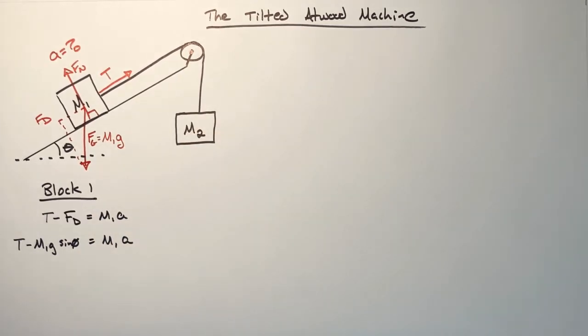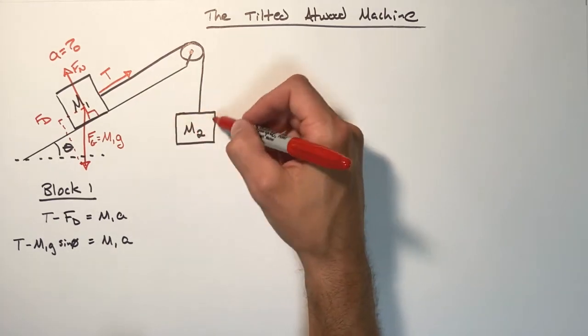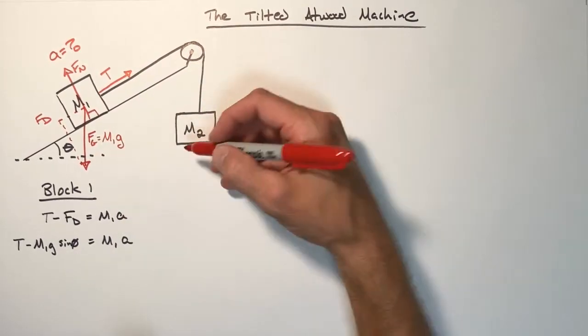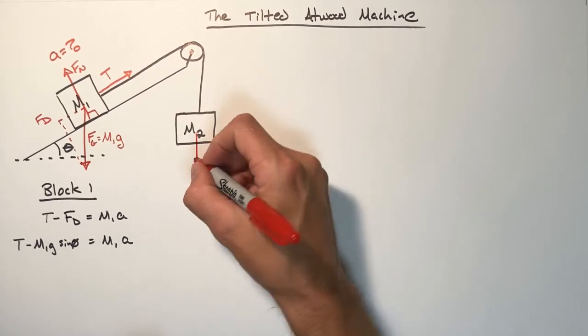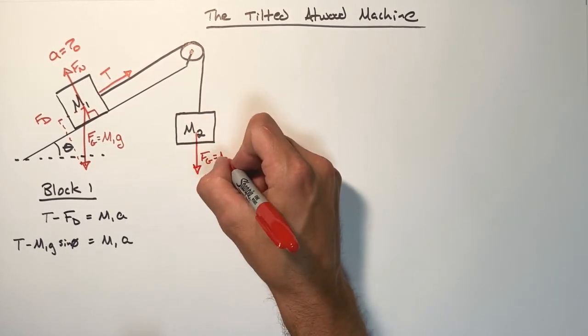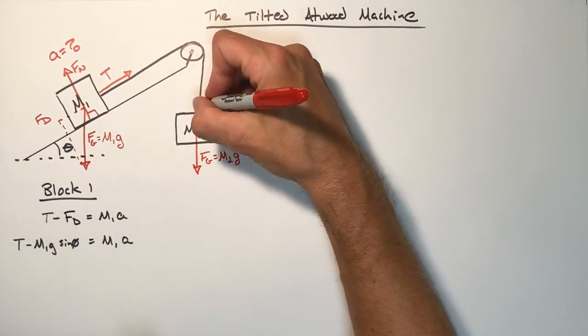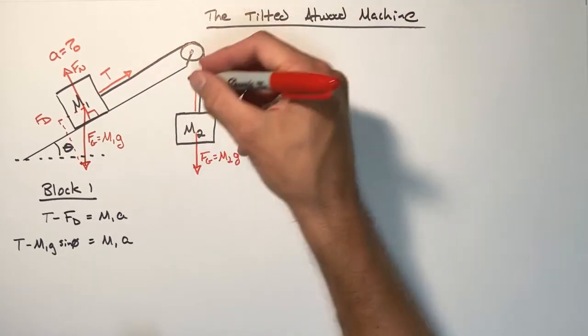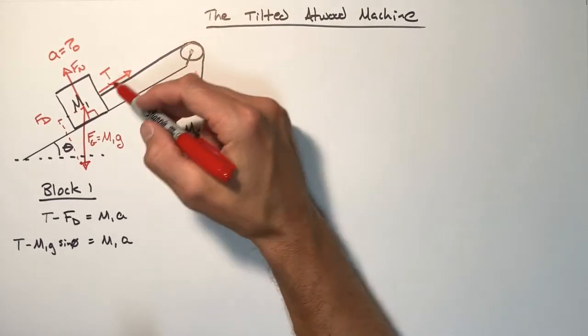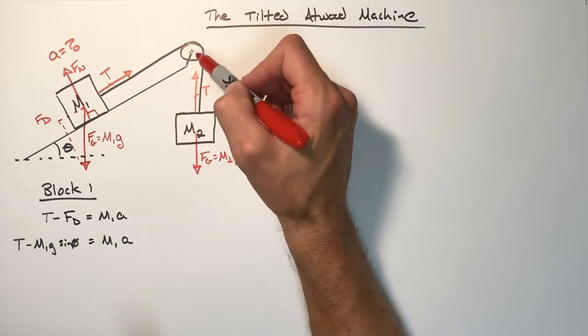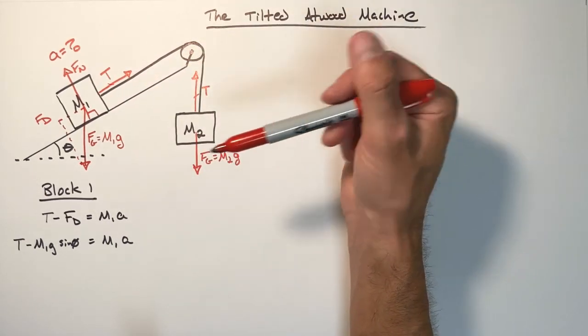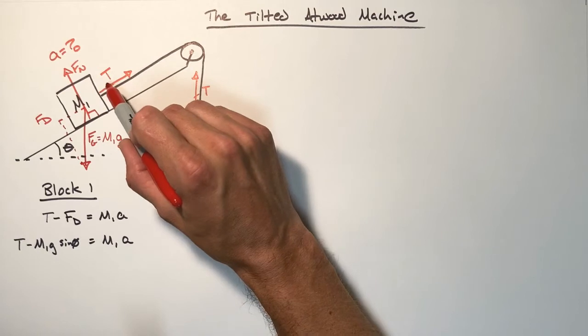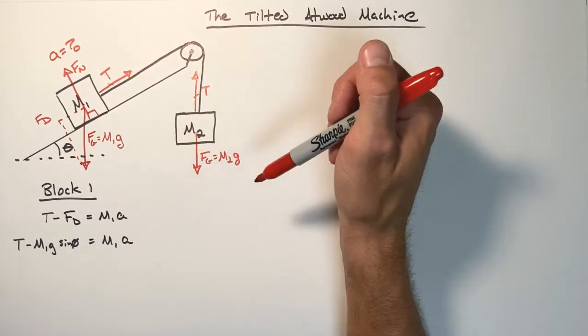We're going to do the same thing for this hanging block over here and it's considerably simpler to look at the hanging block than it is to look at this block on the hill. It's this block on the hill that confuses people the most. This hanging block, it's not too hard to deal with. We have the weight of the block, FG, is the mass, M2, times the acceleration due to gravity. We have the tension acting upward. This tension and this tension have the same value. And that is because this pulley is massless, this pulley has no friction, and the string we're saying has no mass. Those are all things that would complicate this problem. But because we've made those concessions, the tension on both ends of the string are going to be equal.